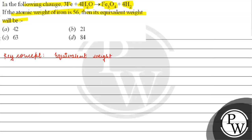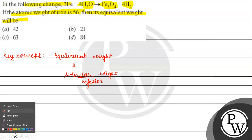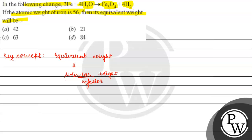Equivalent weight is basically equal to molecular weight divided by n-factor. If we have some reaction, the n-factor is the number of electrons involved in that reaction.